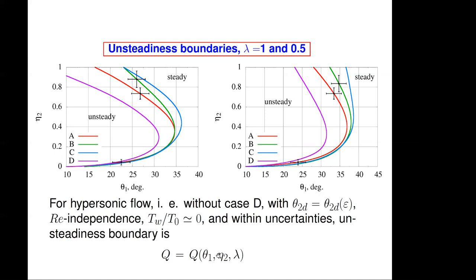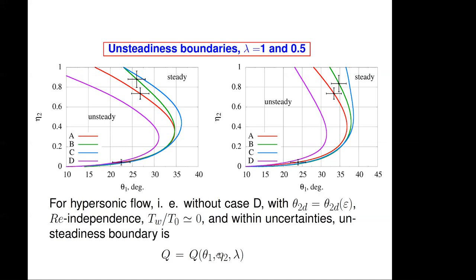That brings me to my conclusions, which are: I found the unsteadiness boundary. And if we want to ensure steady flow, we have to stay either below theta 2D or above 40 degrees with theta one. Unsteadiness is an inviscid phenomenon and the mechanism has been found. And in hypersonic flow, the boundary depends only on three parameters. Thank you.